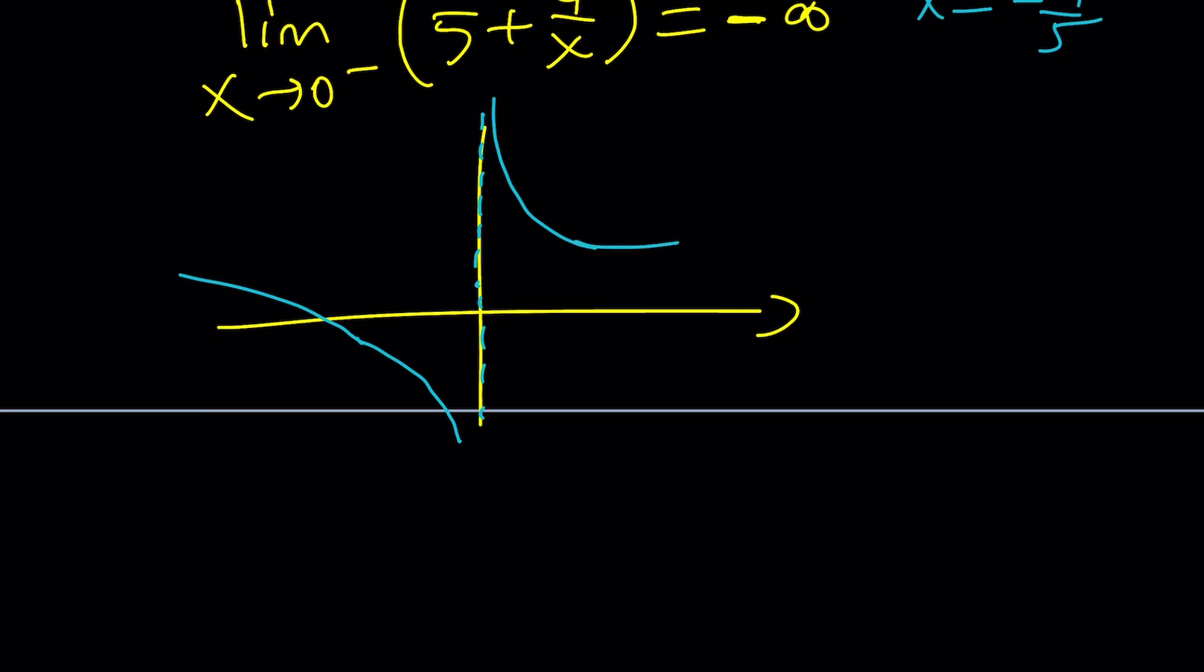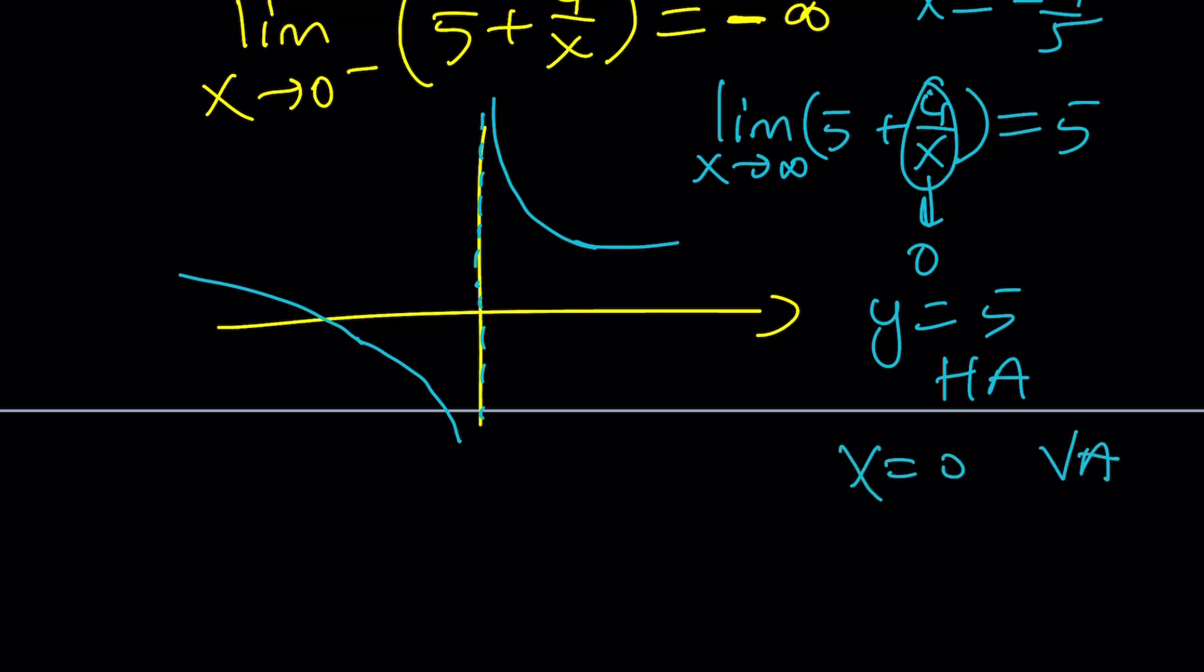If five plus four over x is equal to zero, four over x is negative five. Actually, that happens. X equals negative four over five. So at negative four over five, the graph will have an x-intercept, which is going to be something like this, and it's going to go like this. Maybe there is a horizontal asymptote as well. How do you find the horizontal asymptote? You take the limit as x approaches infinity. If you take the limit as x approaches infinity, obviously, you're going to get this approaching zero, and this limit will be five. That means y equals five is a horizontal asymptote, and x equals zero is a vertical asymptote. Awesome.